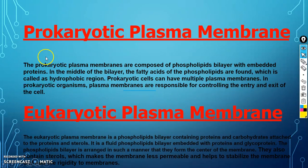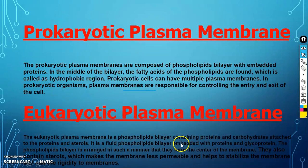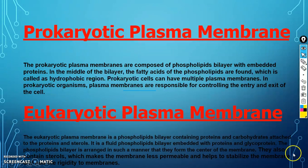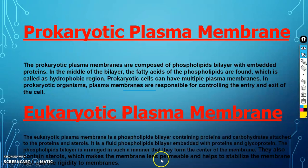Prokaryotic plasma membrane versus eukaryotic plasma membrane: the prokaryotic plasma membrane is composed of a phospholipid bilayer with embedded proteins; the fatty acids of the phospholipids in the middle form the hydrophobic region. Prokaryotic cells have plasma membranes responsible for controlling entry and exit. The eukaryotic plasma membrane is a fluid phospholipid bilayer embedded with proteins, glycoproteins, carbohydrates, and sterols. The phospholipid bilayer forms the center of the membrane. Sterols make the membrane less permeable and help stabilize and add rigidity to the membrane.